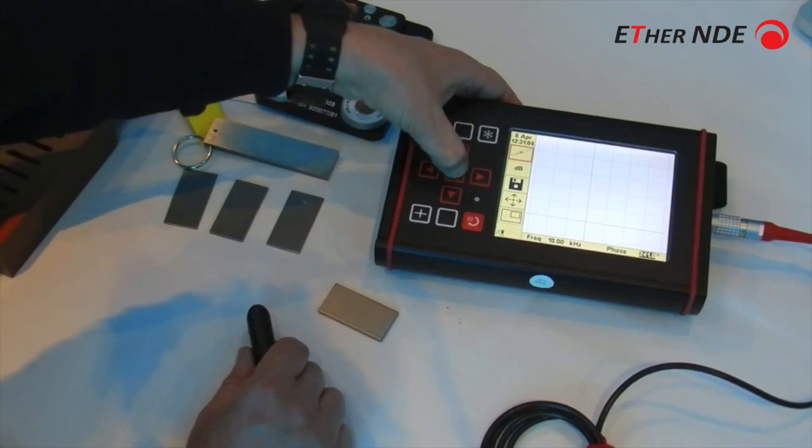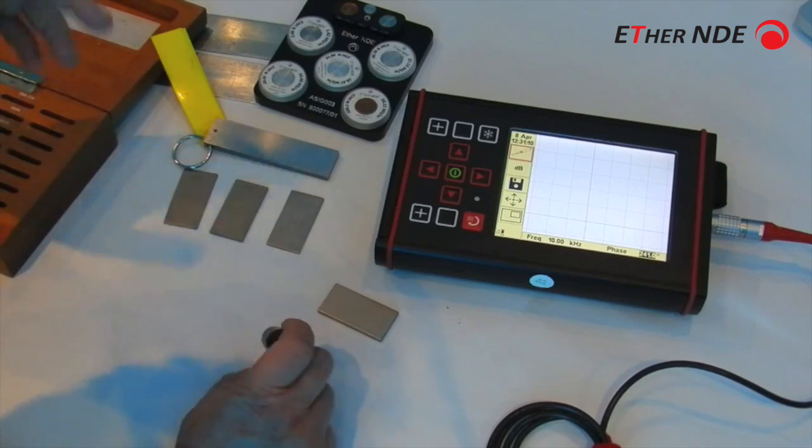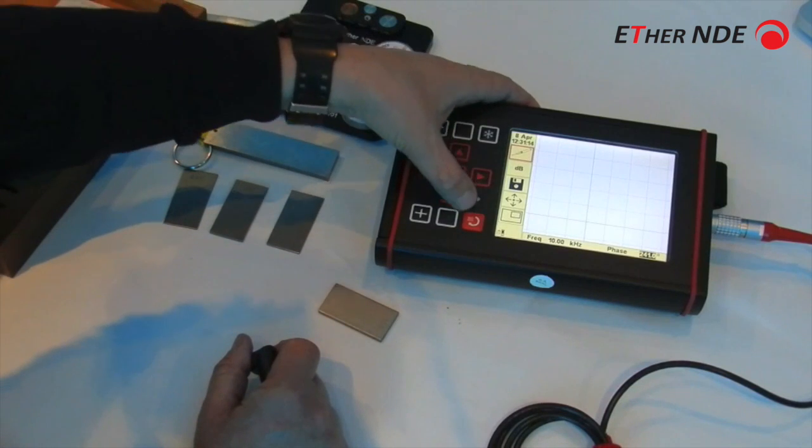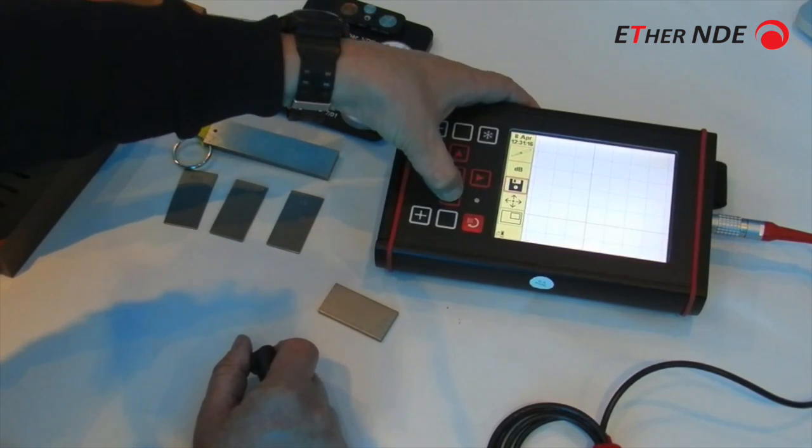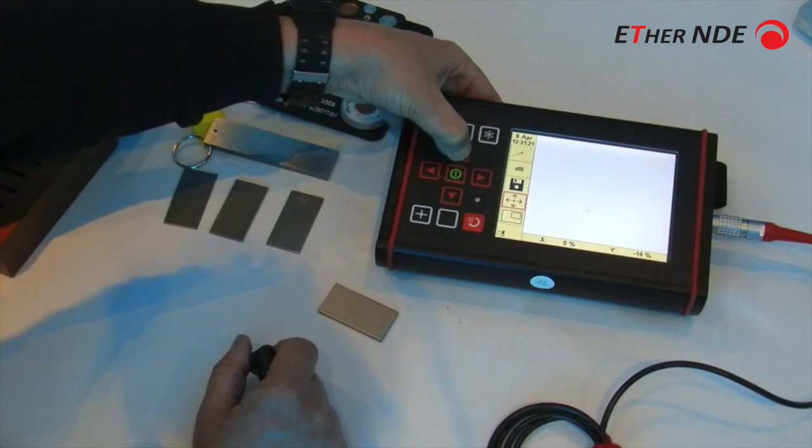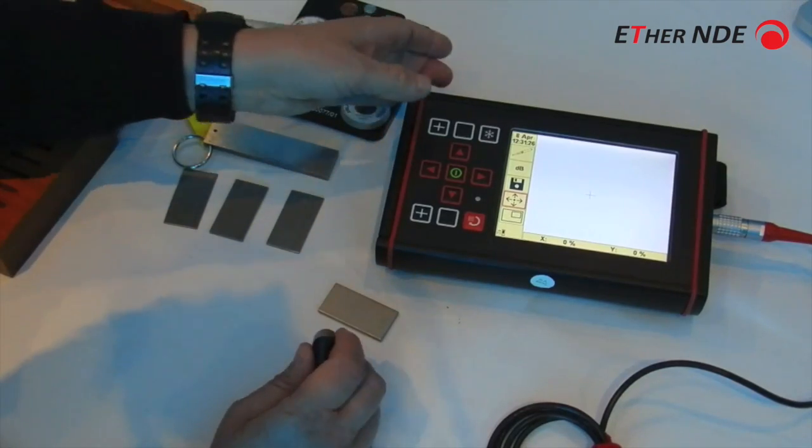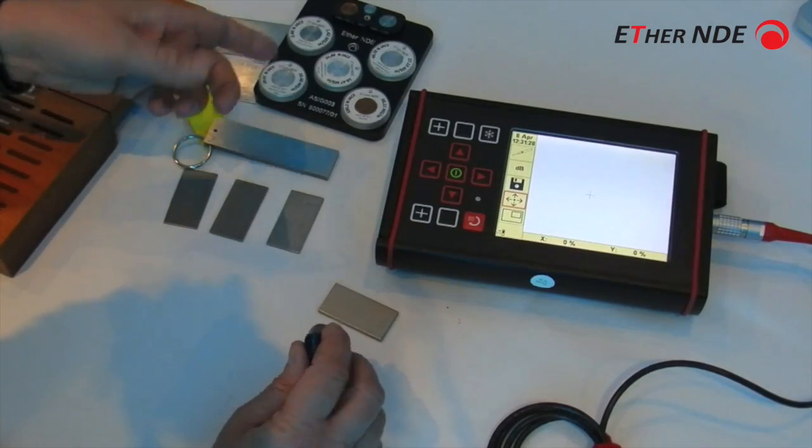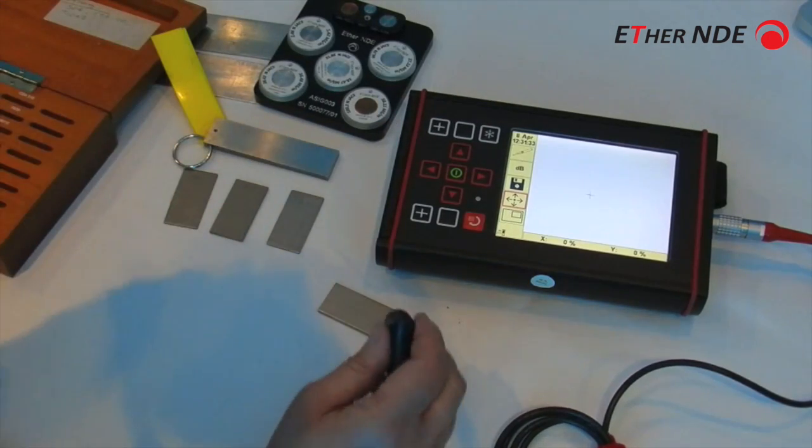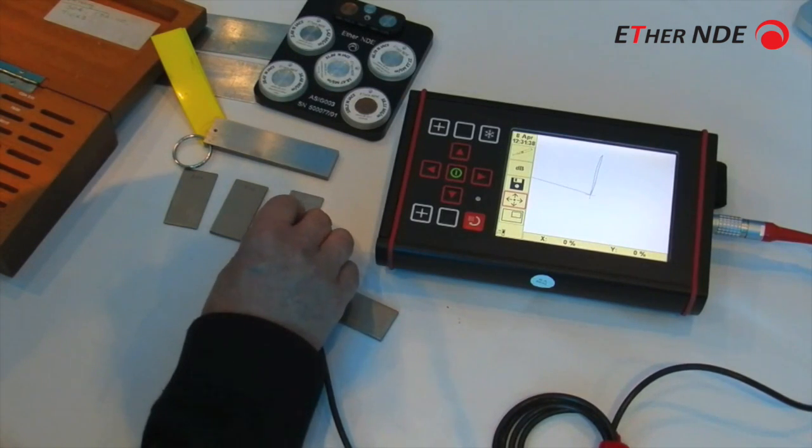Here I've set the probe frequency to 10kHz, because that, from experience, is quite good for doing various material sorting. It might be a good idea to move the spot to the middle of the screen, so let's go and do that. So there's 0, 0. Now, if I balance in air, like we saw with the aluminium, we get various liftoff lines.